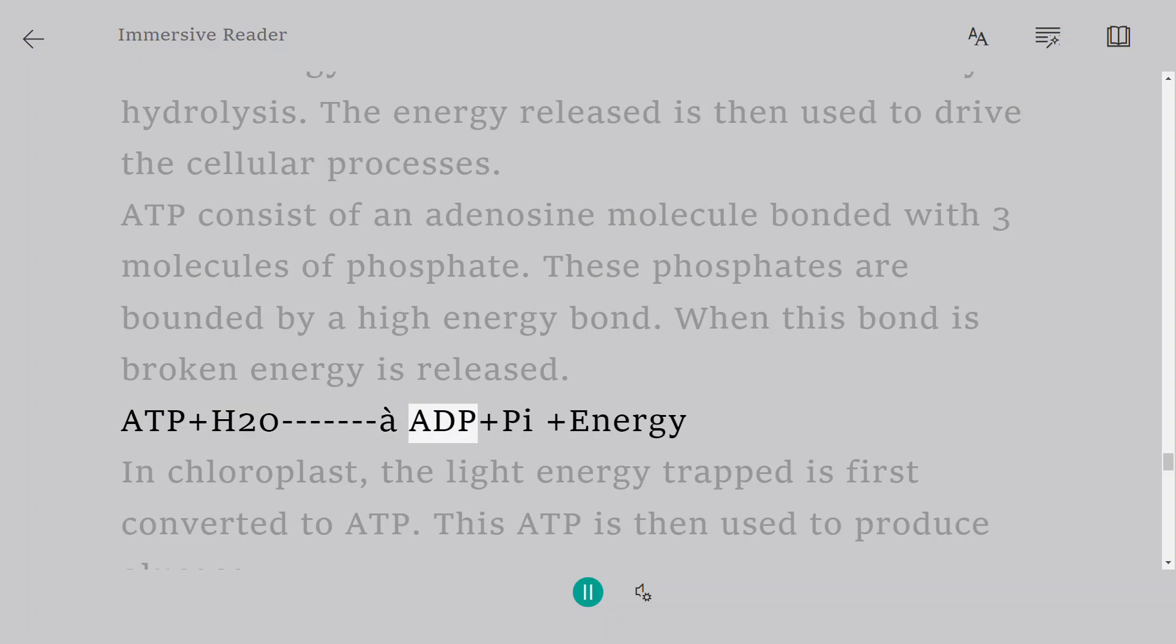ATP plus H2O yields ADP plus Pi plus energy. In chloroplast, the light energy trapped is first converted to ATP. This ATP is then used to produce glucose.